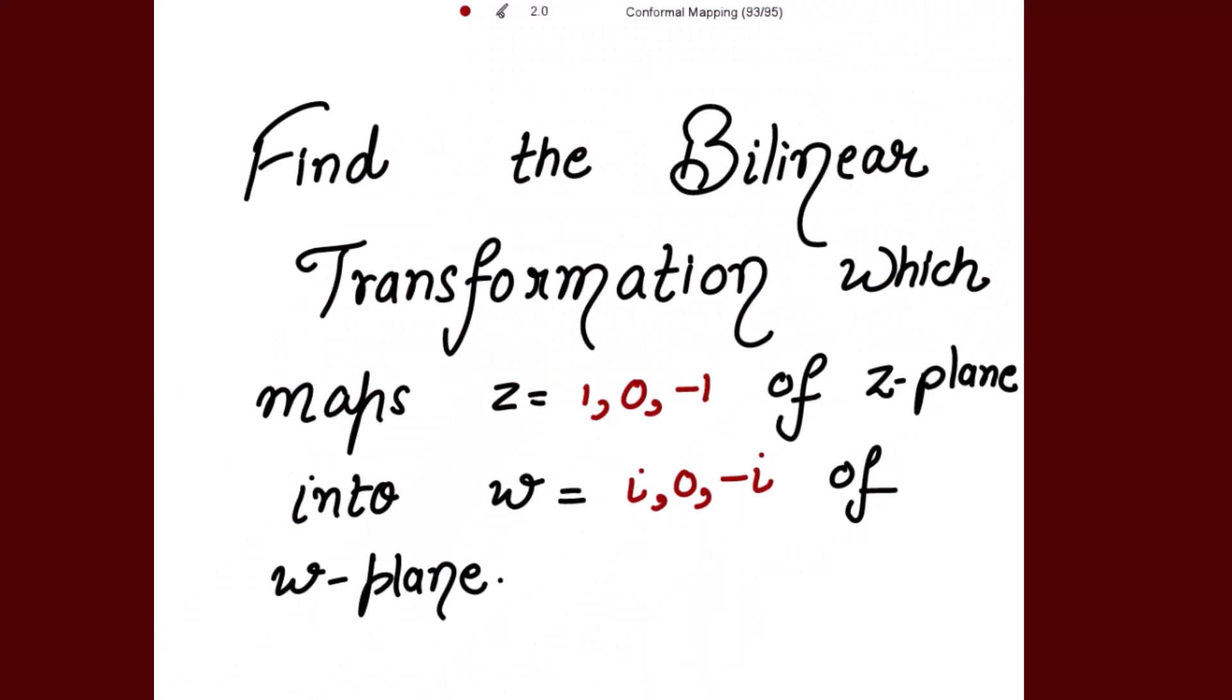Find the bilinear transformation which maps z = 1, 0, -1 of the z-plane into w = iota, 0, -iota of the w-plane.